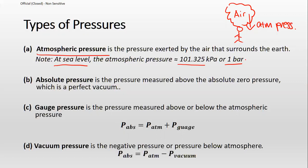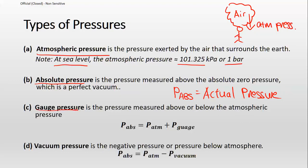Next, absolute pressure is defined as the pressure measured above the absolute zero pressure, which is a perfect vacuum. Essentially, P_abs is the actual pressure of your fluid or gas itself. Gauge pressure is the pressure measured by your instrument with respect to the atmospheric pressure. The formula is: P_absolute = P_atm + P_gauge. Typically, your instrument will measure the P_gauge, so if you want P_absolute, you add P_gauge plus P_atm.